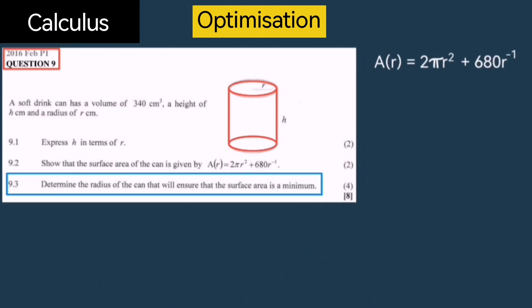Our last question is to determine the radius of the can that will ensure that the surface area is a minimum. For these minimum value type questions, we are simply going to take the derivative and make it equal to 0, then solve that variable. So let's first take the derivative of this area formula with respect to our radius. That gives us 4π R - 680 × r⁻². Let's rewrite the 680 as a fraction: 680 / r².